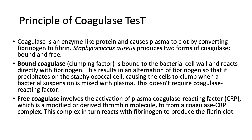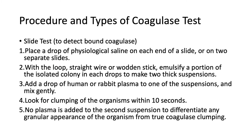The coagulase enzyme is an enzyme-like protein which causes plasma to clot by converting fibrinogen into fibrin. Staphylococcus aureus produces two forms of coagulase. The first is bound coagulase, where the coagulase enzyme is bound to the cell wall of the bacteria. The second is free coagulase, which is an extracellular enzyme found outside the cell of Staphylococcus aureus.